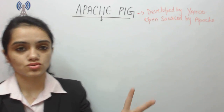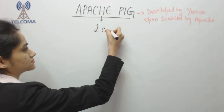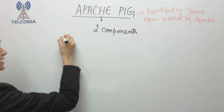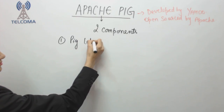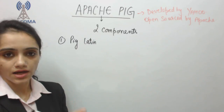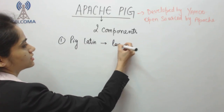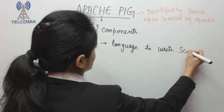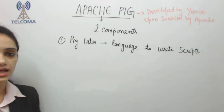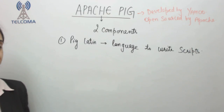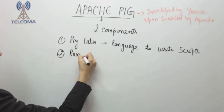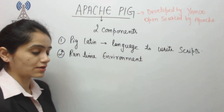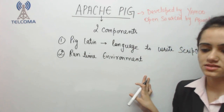Apache Pig contains two components. The first component is Pig Latin, which is basically a language used to write various scripts. The second component is a runtime environment.